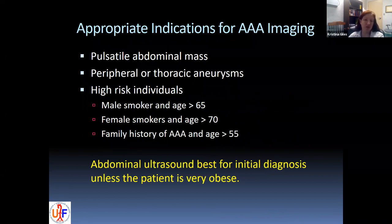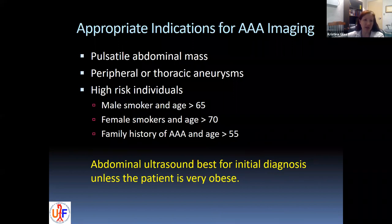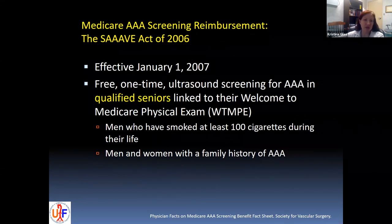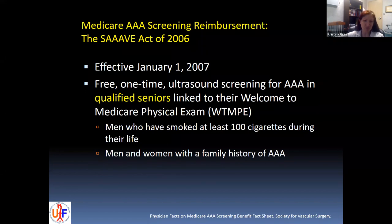On AAA imaging: if you find a patient with a pulsatile abdominal mass or peripheral or thoracic aneurysms, always screen them for AAA. Higher risk individuals include male smokers age greater than 75, female smokers age greater than 70, and patients with a family history of AAA and greater than 55 years of age. Ultrasound is usually the initial diagnostic tool. The welcome to Medicare exam is when patients in the United States are tagged for screening — this includes men who have smoked at least 100 cigarettes and women with a family history of AAA, at their 65th birthday.